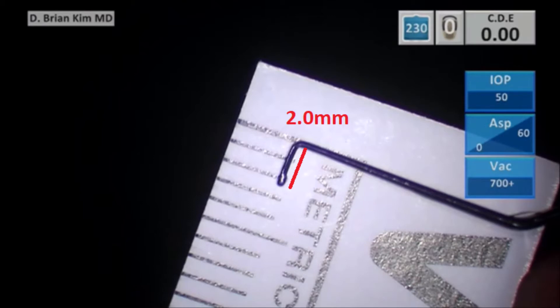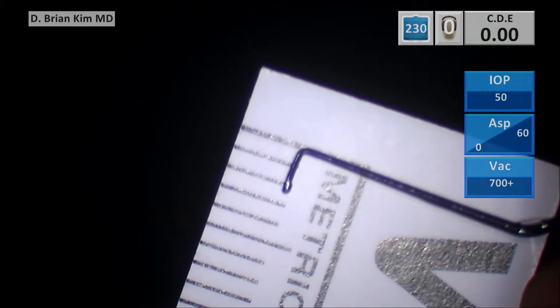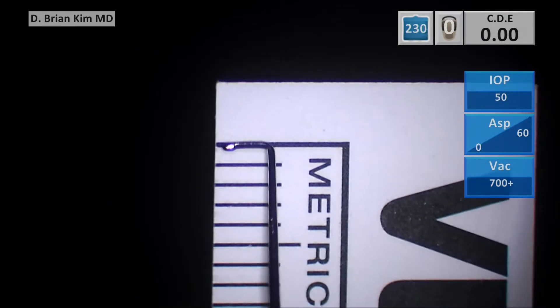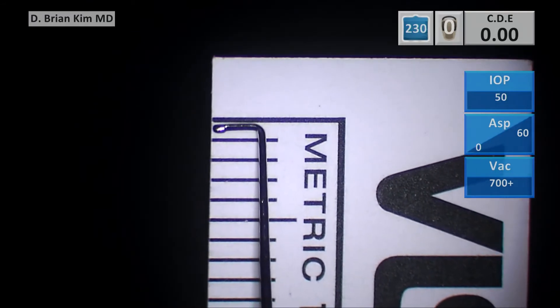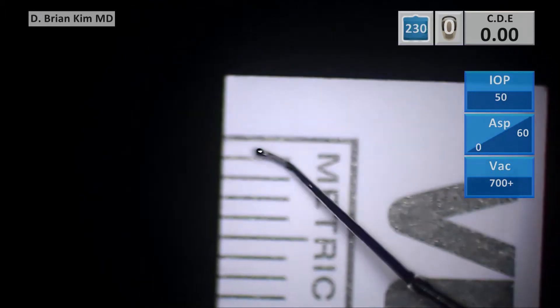You can see it has a rounded tip. It is a little bit larger than the girth of the shaft, one and a half times thicker than the shaft. It has a rounded design, so this is very safe. You can protect the posterior capsule. You can place this out to the equator. As a result, you can do a lot of maneuvers within the bag very safely.